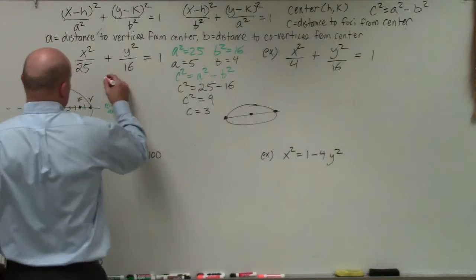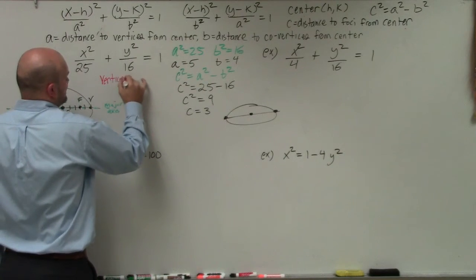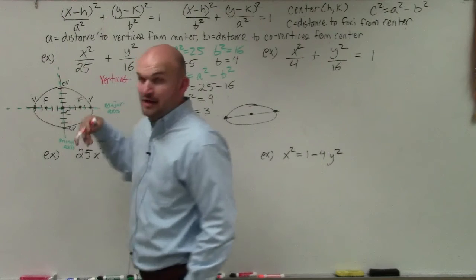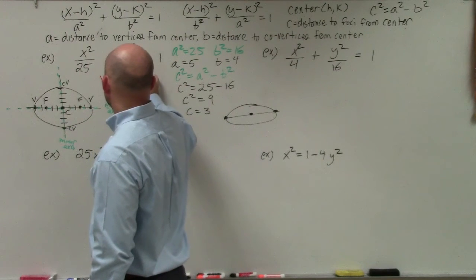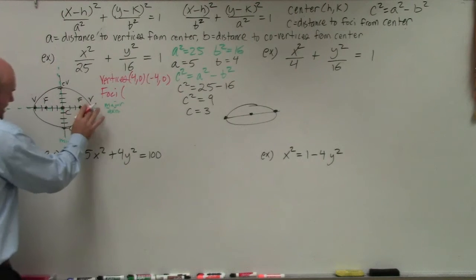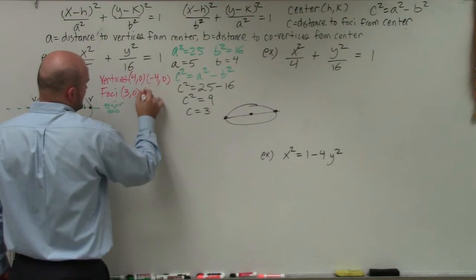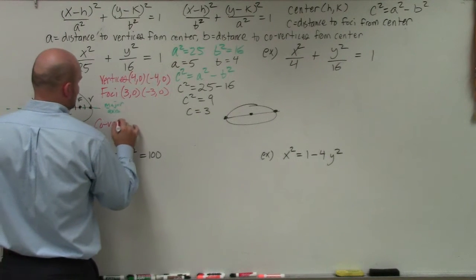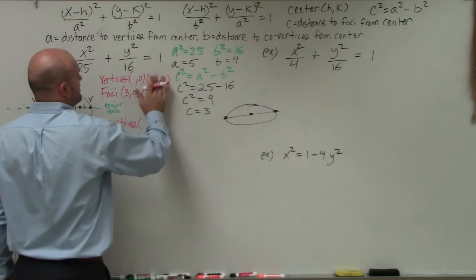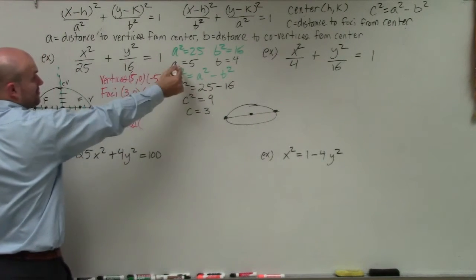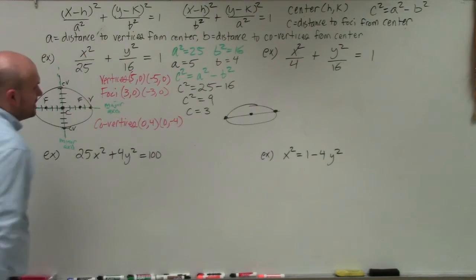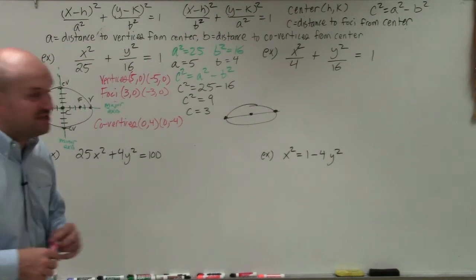Now let's write out the coordinates. The vertices are at (5, 0) and (−5, 0). The foci are at (3, 0) and (−3, 0). The co-vertices are up 4 and down 4, so (0, 4) and (0, −4). And there you go — vertices, foci, and co-vertices found for the first example.